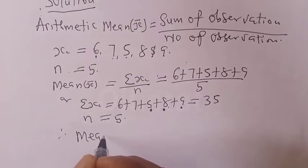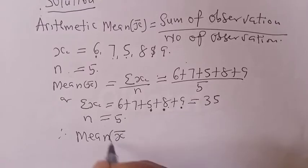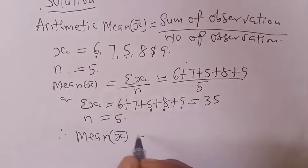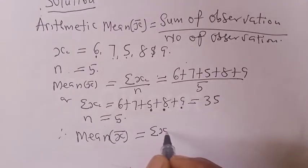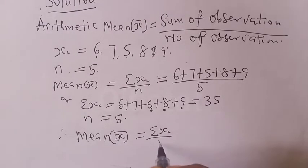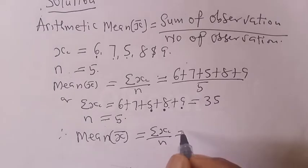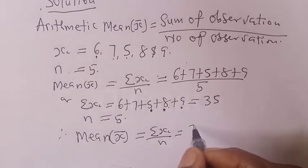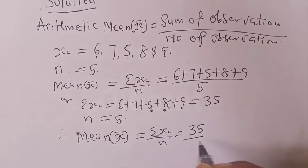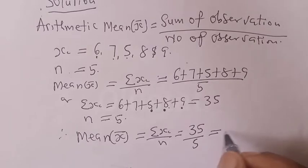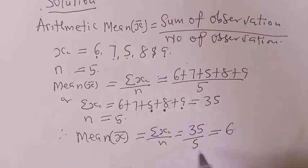Therefore, mean x-bar is given by the summation of xi over n, which is equal to 35 over 5, which is equal to 7.